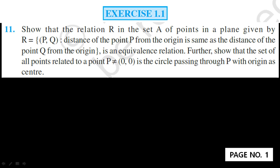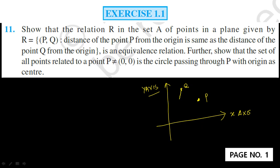To start with the problem, I would like to draw one diagram. This is the coordinate system with the x-axis and y-axis. Suppose I am considering one point P and a second point Q. This is the distance from the origin to Q and this is the distance from the origin to P. The distance of point P from the origin is the same as the distance of point Q from the origin. I can write this as: the pair (P,Q) such that OP is equal to OQ. This is the condition.